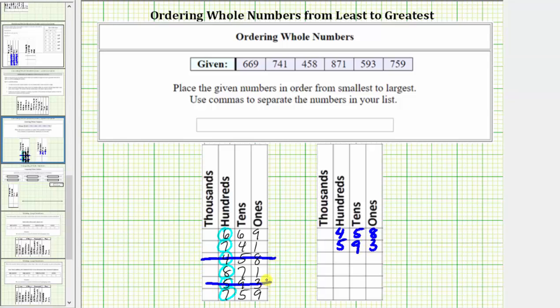Looking at the remaining numbers, again comparing the values in the hundreds place value, six is the smallest value in the hundreds place value, and therefore 669 is the next number in our sorted list.